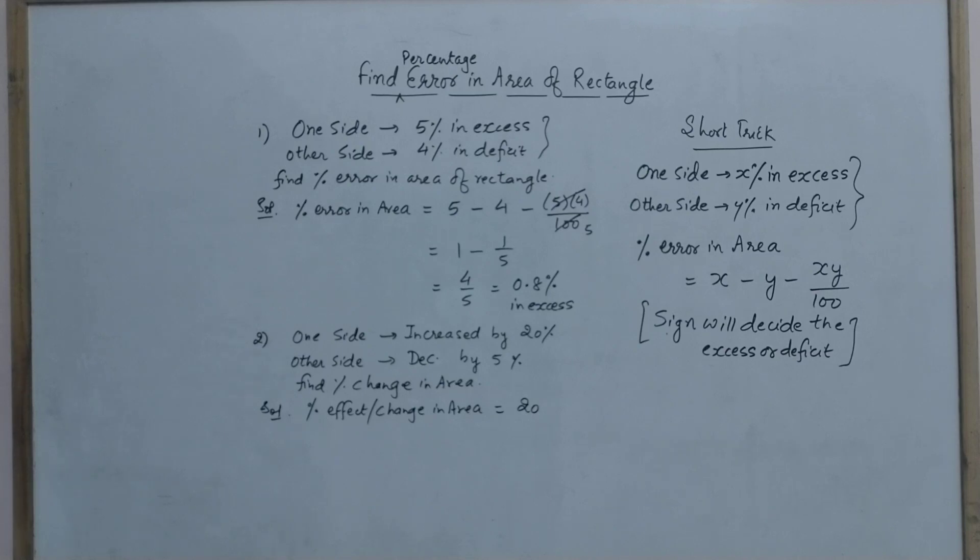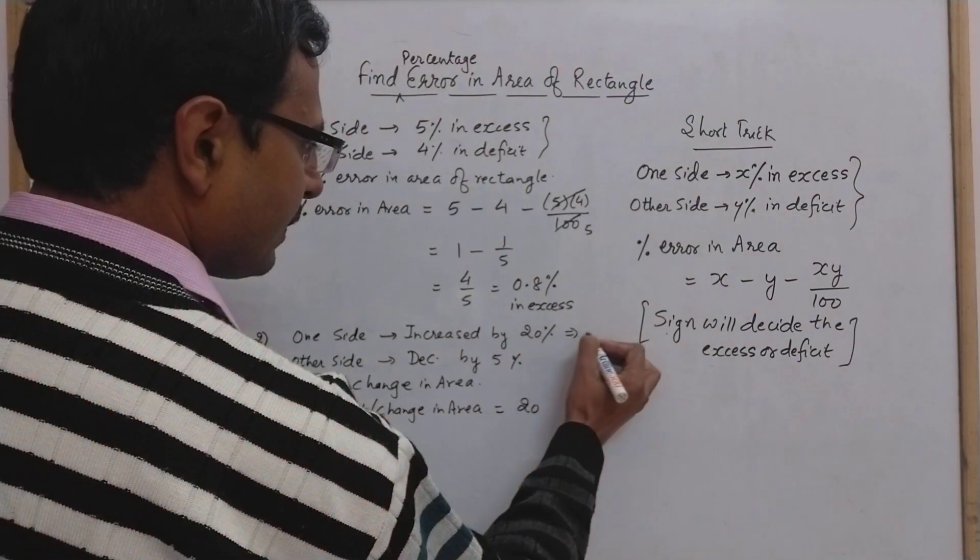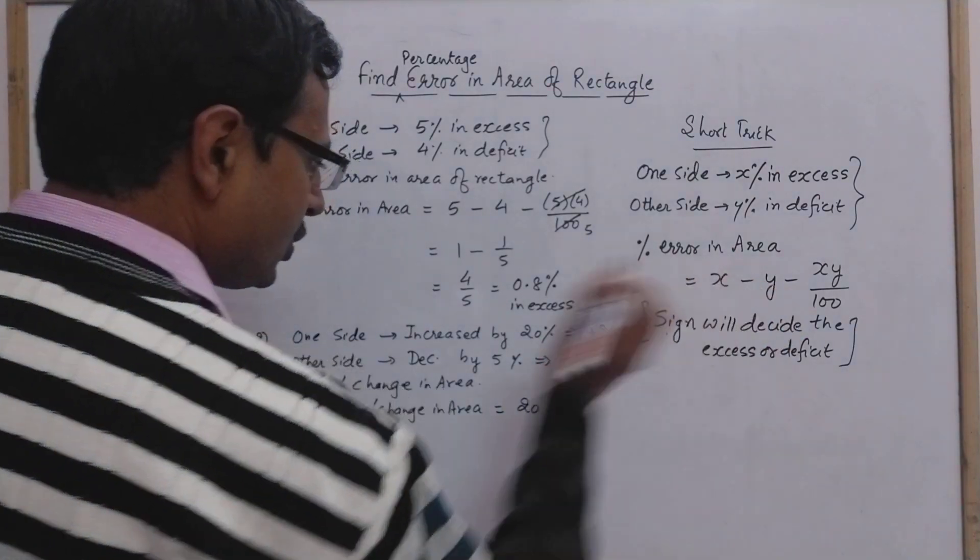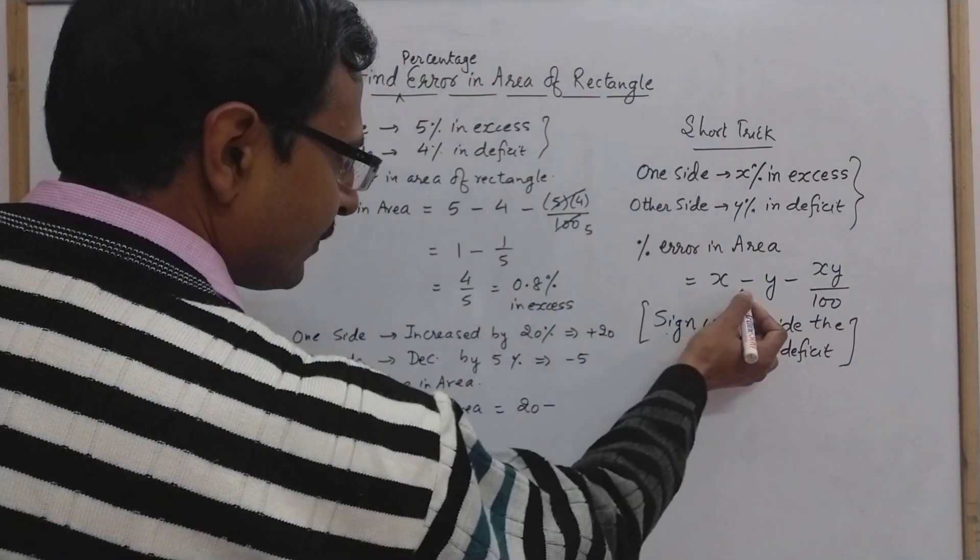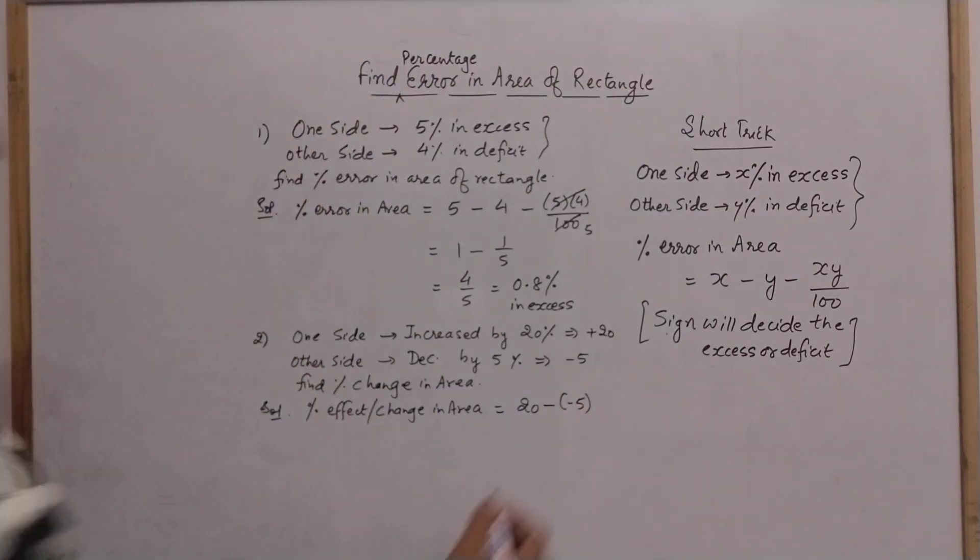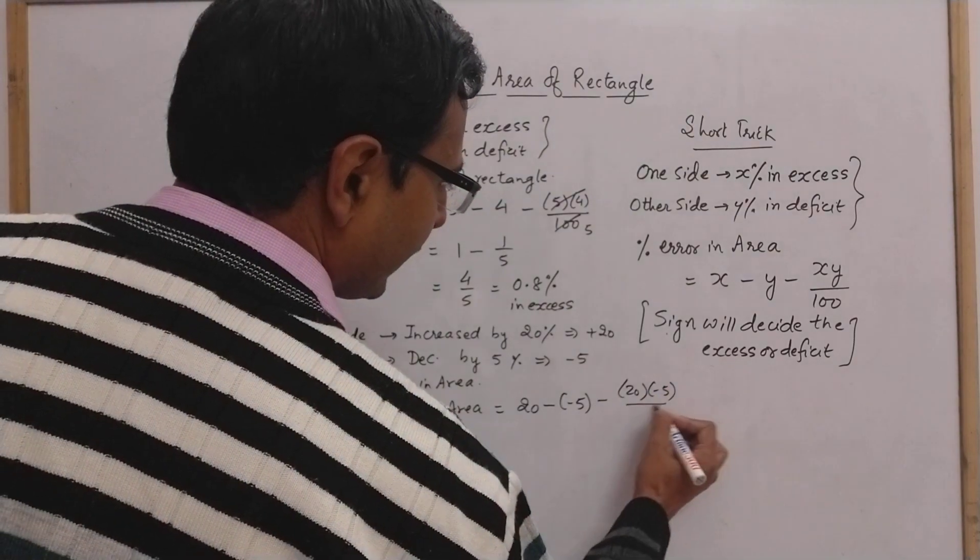In this case, see, increase is plus 20 and decrease is minus 5. So when we substitute it here, this will become 20 plus, 20 minus y. Y is minus 5, and then we will have the same product of these two, 20 and minus 5, divided by 100.